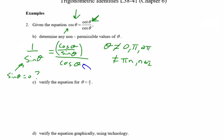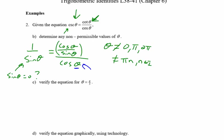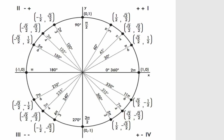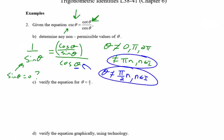We're also dividing by cos θ, so I have to think about where cos θ equals zero. Again, from the unit circle, cosine is the x-value and equals zero at π/2 and again at 3π/2. So the second restriction is θ cannot equal (π/2)n, where n is a member of the integers. Those are my non-permissible values.